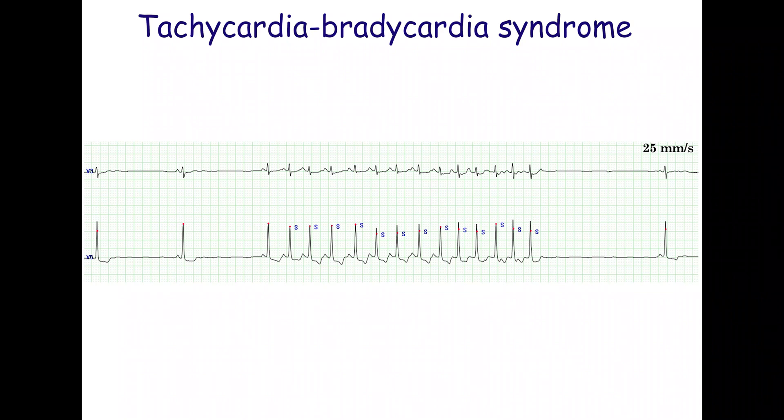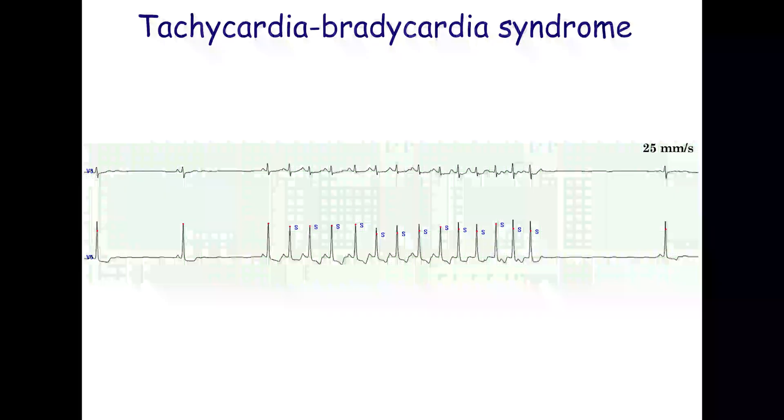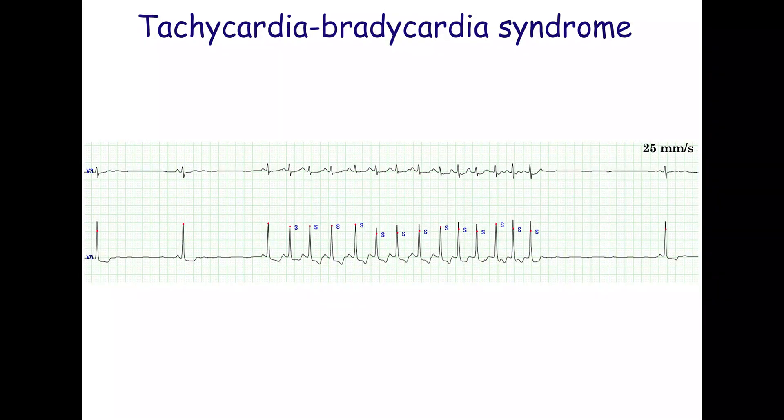Patients with tachycardia-bradycardia syndrome and symptomatic chronotropic incompetence typically require a permanent pacemaker. If a pacemaker is implanted in a patient with chronotropic incompetence, one with a rate modulation function is preferred.